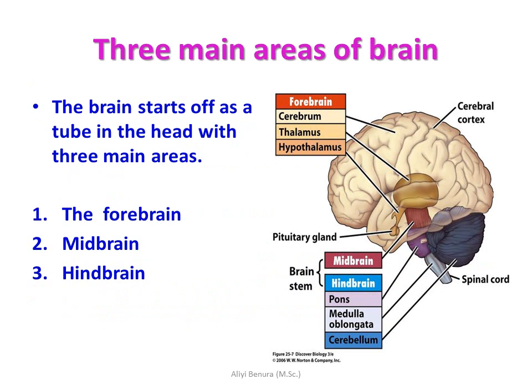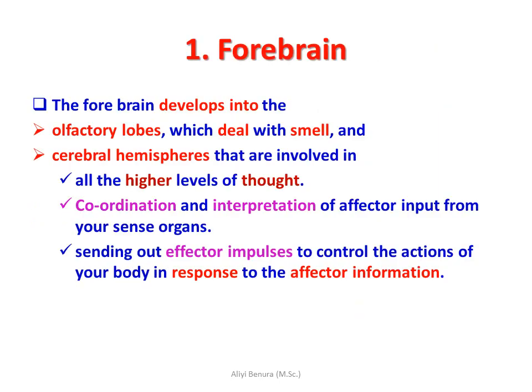There are three main regions of the brain: the forebrain, midbrain, and hindbrain. The forebrain includes the cerebrum, thalamus, and hypothalamus. The forebrain develops into the olfactory lobes, which deal with smell, and the cerebral hemispheres, which are involved in all higher-level thoughts, coordination, and interpretation of sensory input from your sensory organs, and also sending out impulses to control the actions of your body.